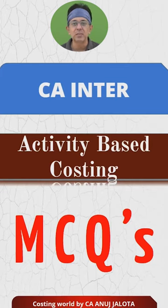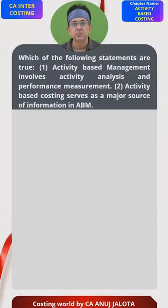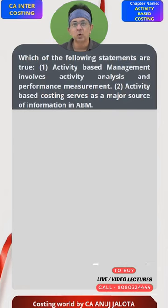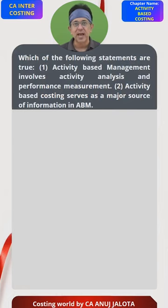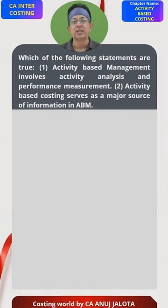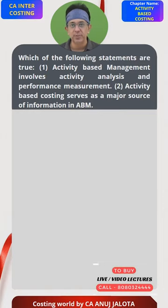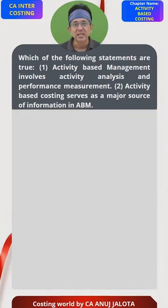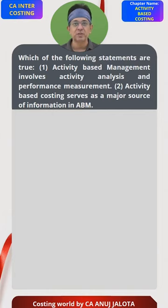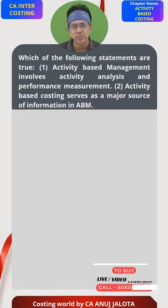CA Inter Activity-Based Costing MCQs. Which of the following statements are correct? First: Activity-Based Management involves activity analysis and performance measurement. Second: Activity-Based Costing serves as a major source of information in ABM, which stands for Activity-Based Management.